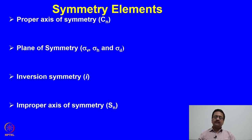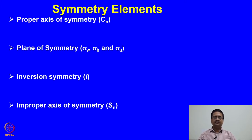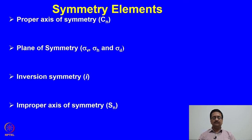When we try to identify the symmetry elements that may be present in a molecule, we need to really study the molecule in three dimensions. We need to find out what are the possible elements of symmetry that are present in the molecule. We need to understand a few different types of symmetry elements that are known to be present in molecules.